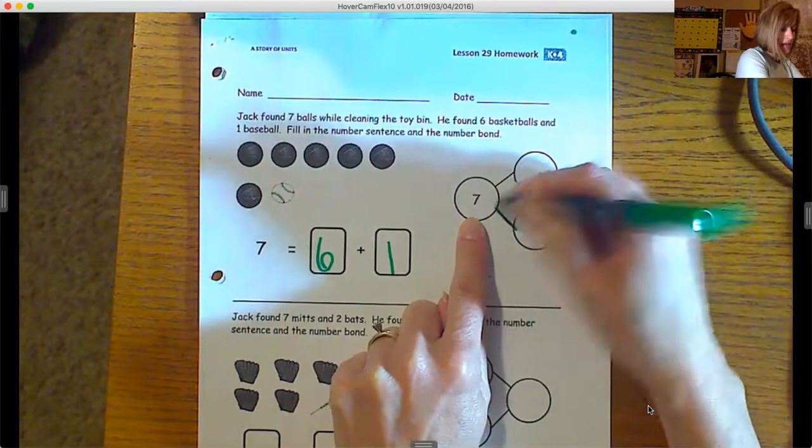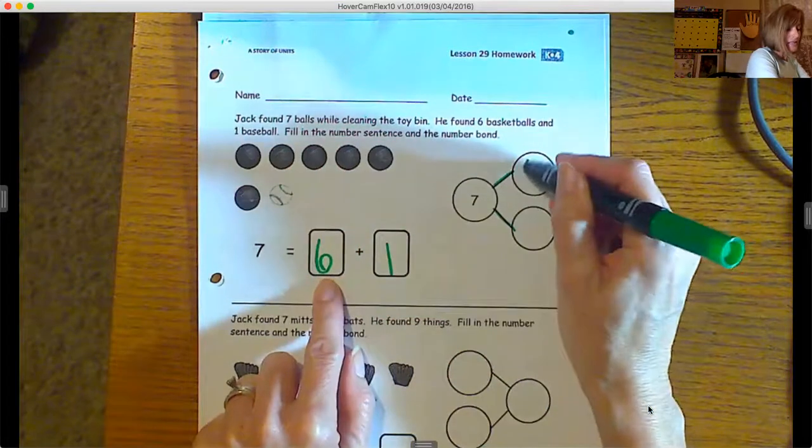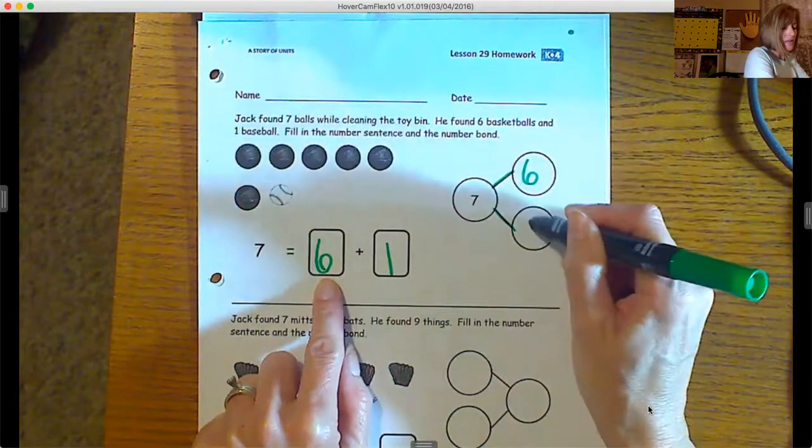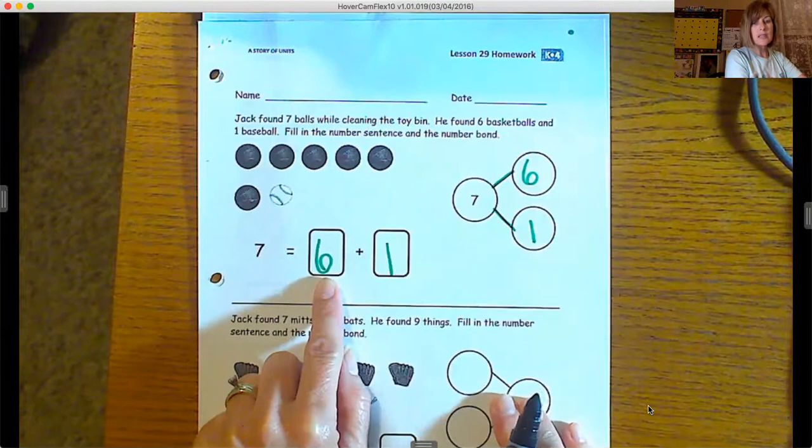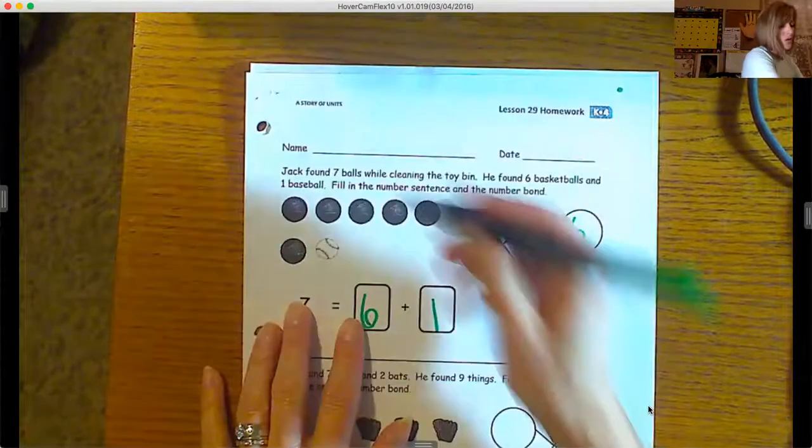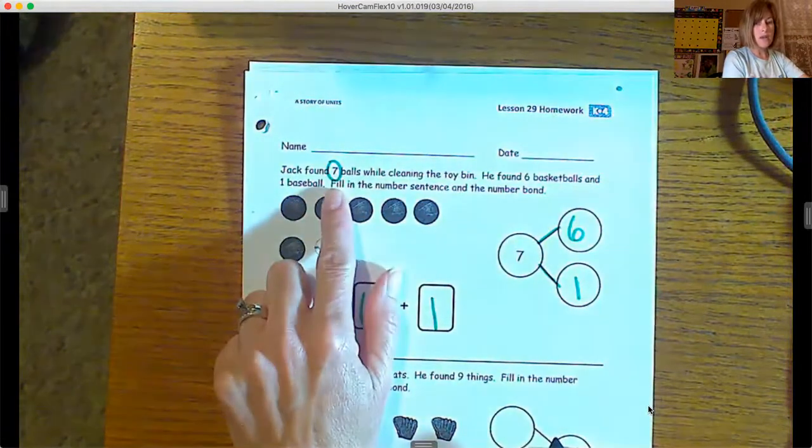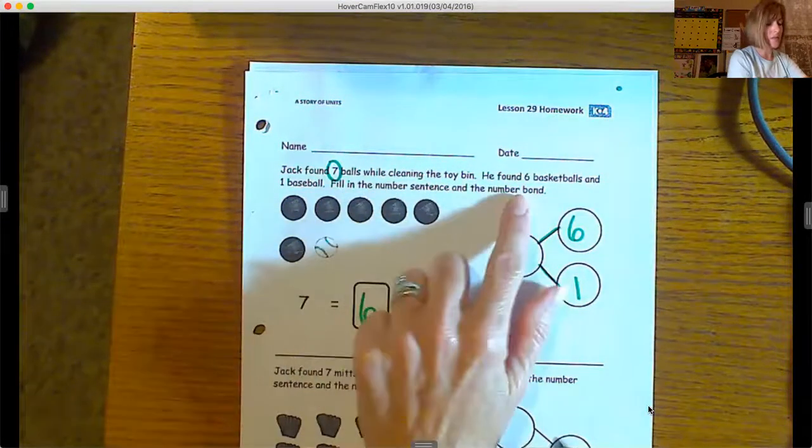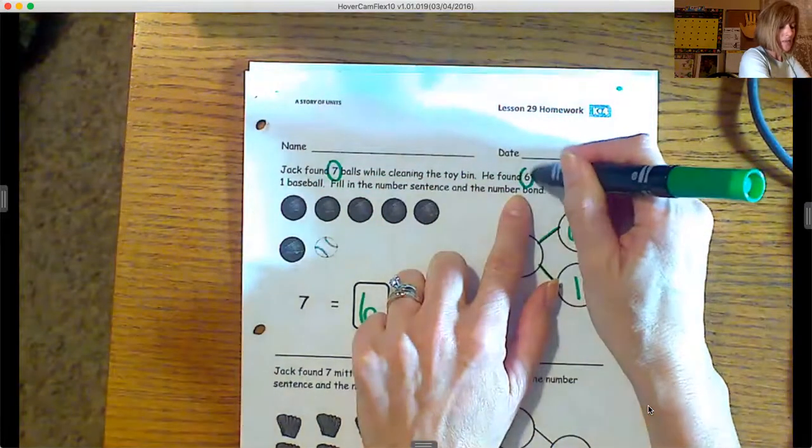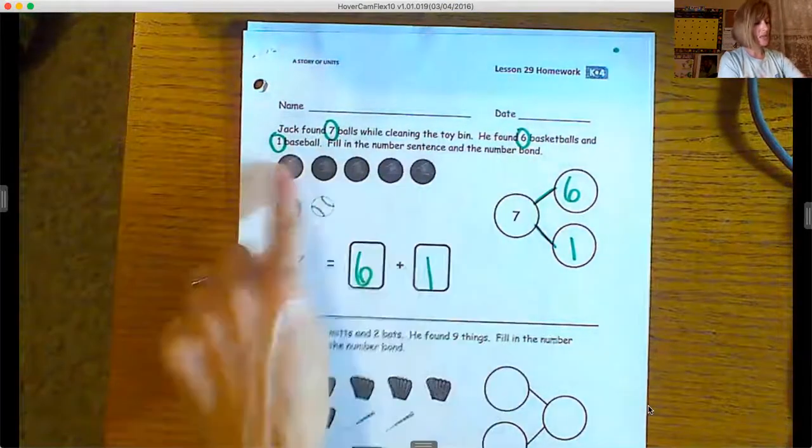This number is the whole number, and then these two numbers are the two parts that make that whole number because they travel down these paths to get there. So we had six and one. Now also remember, kiddos, I like to underline sometimes the important information that we need or circle. So there was the seven—Jack found seven balls while cleaning the toy bin. He found six basketballs and one baseball. So I had seven, six, and one. We used all those numbers. It's just up to you to figure out the order that we put them in.